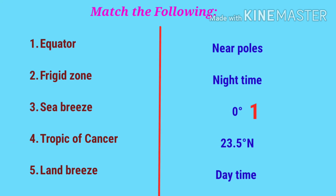Now we'll do match the following. Equator — zero degree. Frigid zone — near poles. Sea breeze — daytime. Tropic of Cancer — 23.5 degrees north. Land breeze — night time.